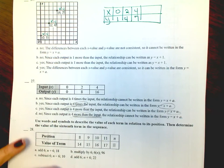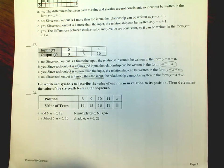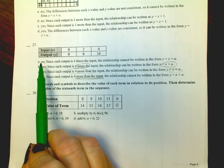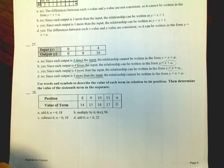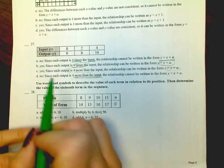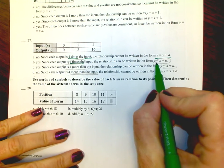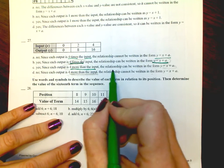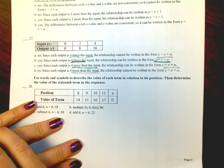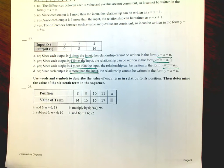Number 27: Look at your input and output to find the pattern. A: No — each output is 4 times the input, so it cannot be written in this additive form. B: Yes — since the output is 4 times the input, the relationship can be written in this form. C: Yes — since each output is 4 more than the input, it can be written in this form. Which of those is the correct answer?